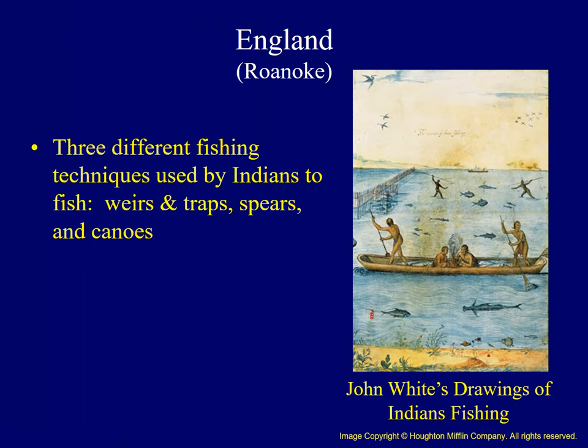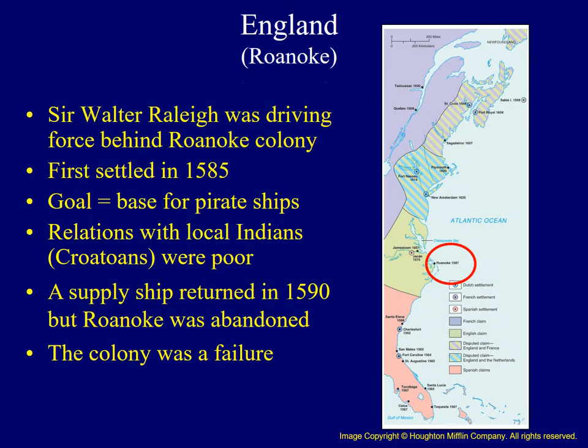A drawing from John White, a member of the colony, demonstrates different methods used by Indians to fish — including construction of weirs and traps, spearing fish in shallow water, and fishing from dugout canoes. Communication between Raleigh and the colony was interrupted more than once as war raged between England and Spain. When a supply ship finally arrived in 1590, they returned only to find the colony deserted with the word 'Croatoan' carved into a tree. No one is sure of the exact fate of the colonists, and this early attempt to establish a colony ended in failure.